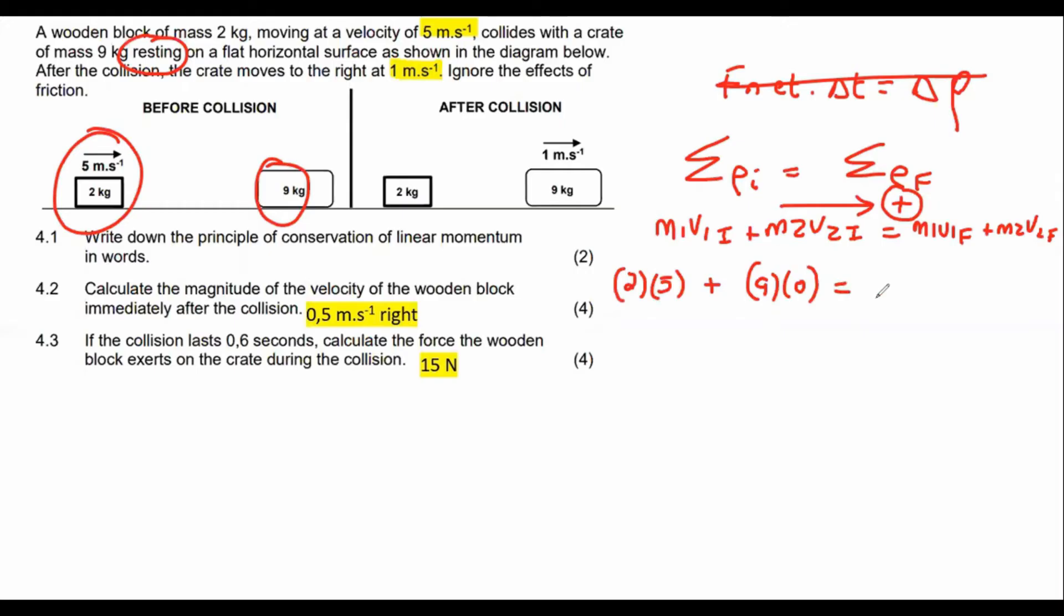And then we're going to say equals now the two kilogram. We don't know what the two kilogram block is doing. So we're just going to say that its mass is still two, of course, but we don't know what its velocity is.